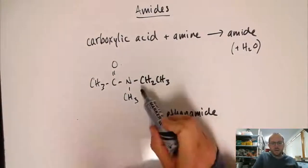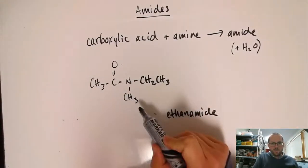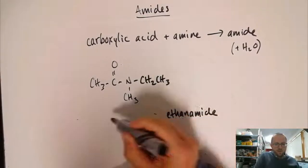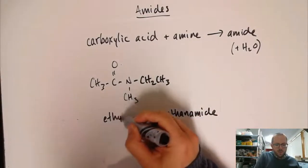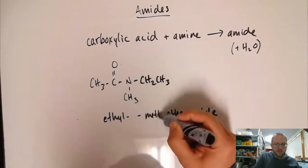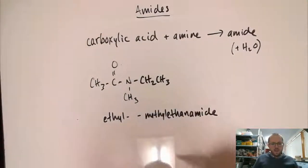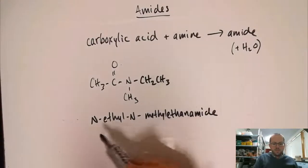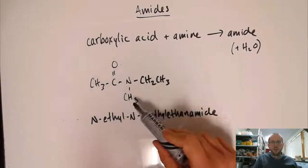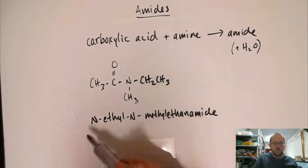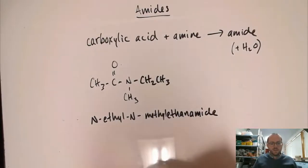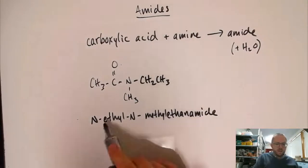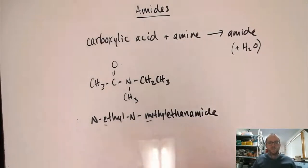We've got an ethyl group and a methyl group attached to our N. I'm going to do ethyl first and then methyl second, because E comes before M. Both of these are on the nitrogen, so I'm going to say N-ethyl and then N-methyl ethanamide. I've identified there is both an ethyl group and a methyl group attached to the nitrogen. We're using N's instead of numbers, because that's what we do, and I've put them E before M in our sequence. N-ethyl-N-methyl ethanamide.